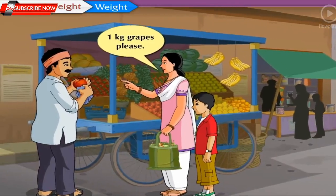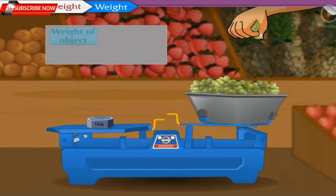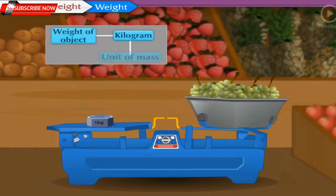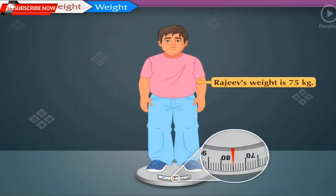In daily life, we use weight for both mass and weight and measure the weight in kilograms which is the unit of mass. But in science, when we say that Rajiv's weight is 75 kilograms, we mean Rajiv's mass.